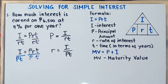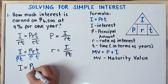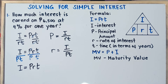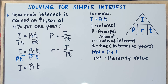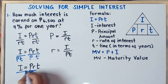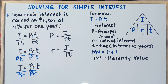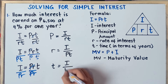Now what if you are looking for the time? Starting from I equals PRT, to get the value of time, you divide both sides by PR so that the remaining equation will be only T. Therefore, the formula for time equals I over PR.